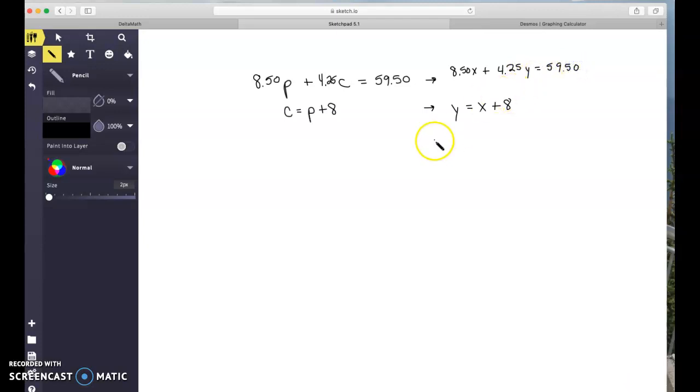The second equation is already in Y equals format which is awesome. So the first equation we may just want to solve it to put it into Y equals MX plus B form. I'm going to do that by subtracting my 850 X from both sides. I'm trying to get Y by itself and I remember I used SadMap to help me know what to get rid of first.